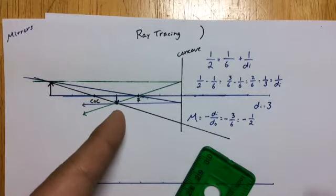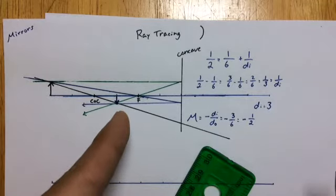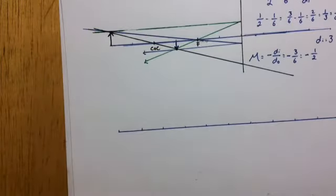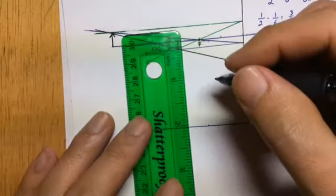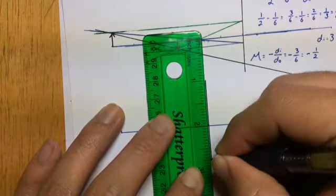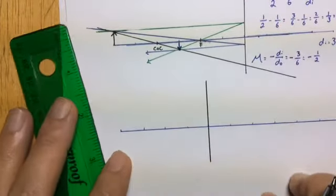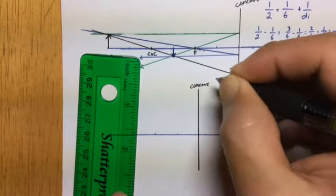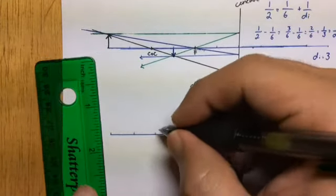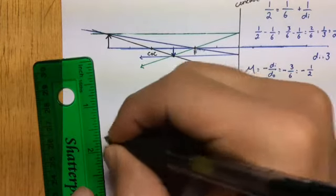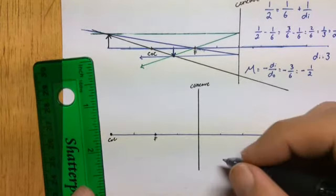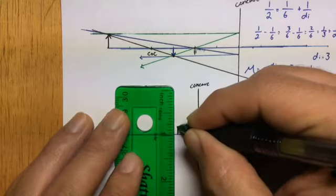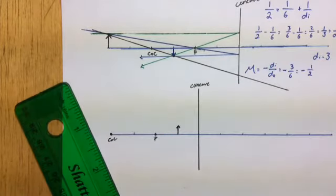Now let's do another concave mirror example to show what happens when the object is placed inside the focal point. I'll set this one up over here — drawing the mirror, labeling it concave, marking the focal point F, and the center of curvature twice as far. This time I'm going to put the object right inside the focal point, and I'll make it relatively small — you'll see why when we start drawing the rays.